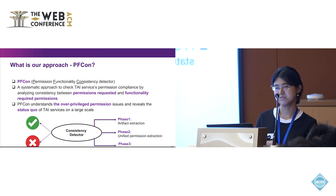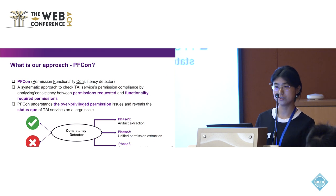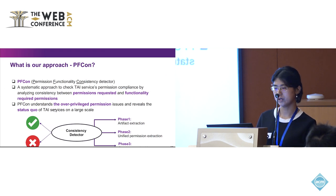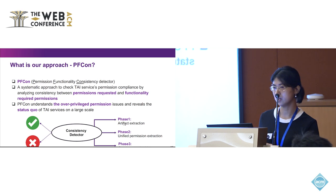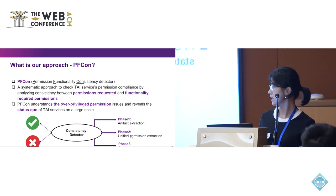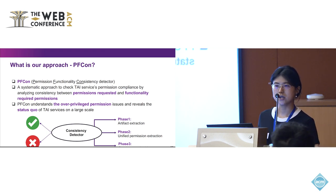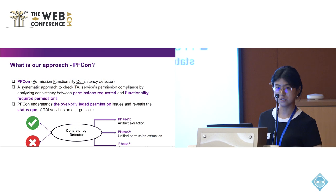Our approach is called PFCon — the Permission, Functionality, Consistency detector. It is our systematic approach to check the permission requests by TIE and its actual functionality, and to understand the overprivileged issue of excessive permission requests in real-world TIE services. Our approach is divided into three phases: Phase 1 extracts available artifacts including functionality and requested permissions; Phase 2 performs unified permission extraction; and Phase 3 constructs the latent system and performs consistency checking.